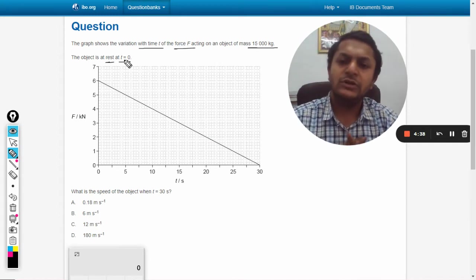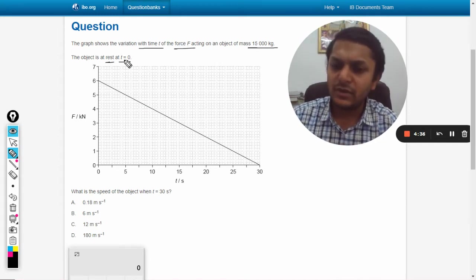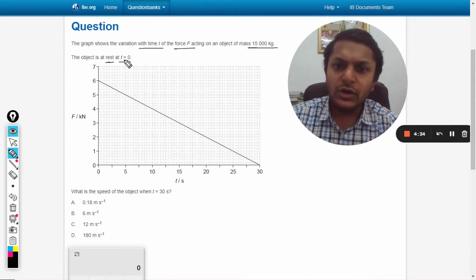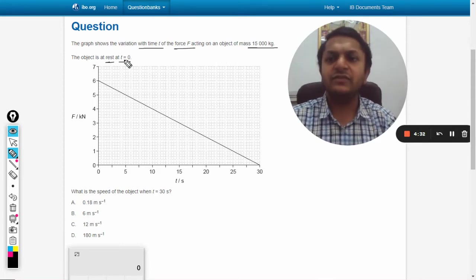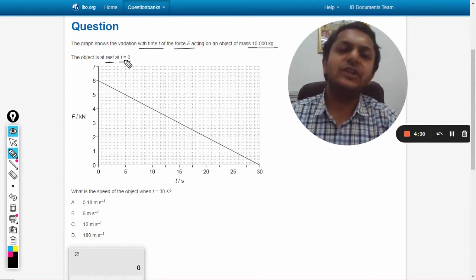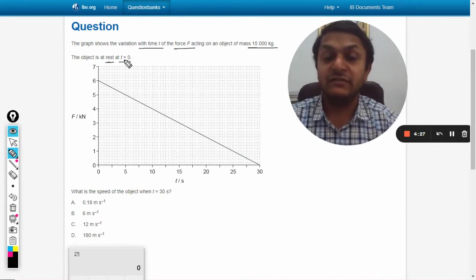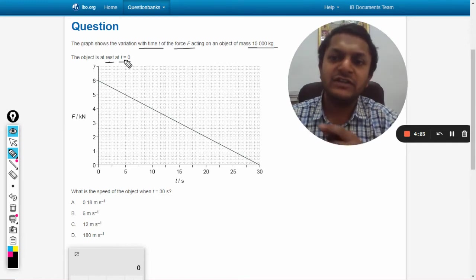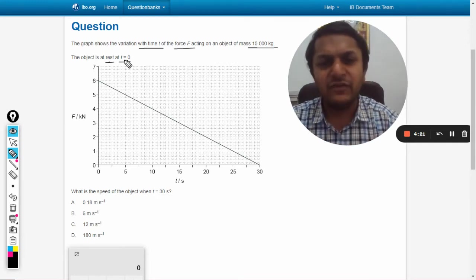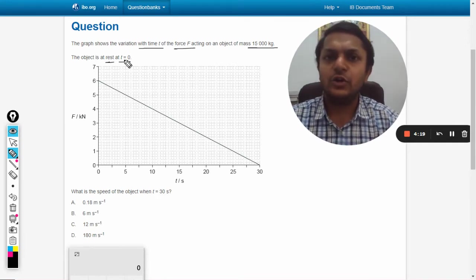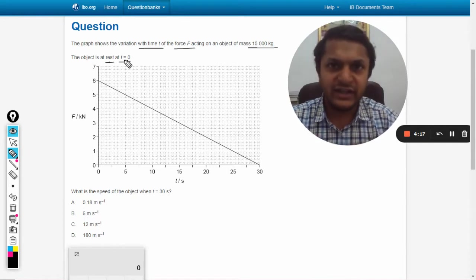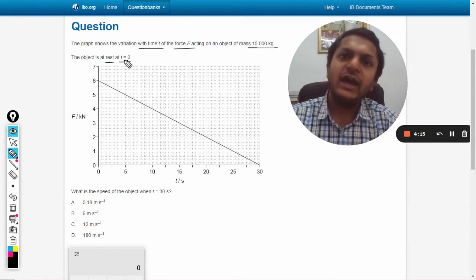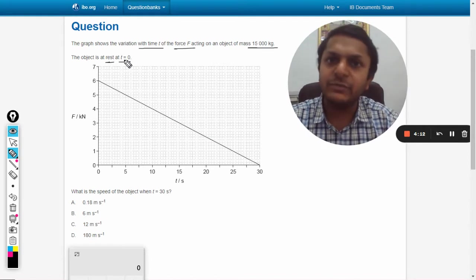Generally, the graph of force and displacement is given, and we say that the area under the curve will be work done. If it was force and displacement, we would have found the total work done by finding the area under the curve and equated it with the change in kinetic energy. From there we would have found the velocity.